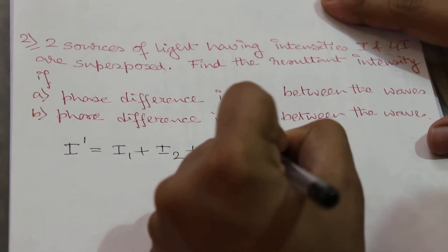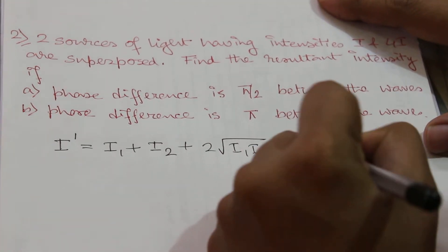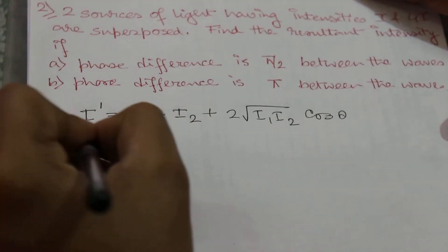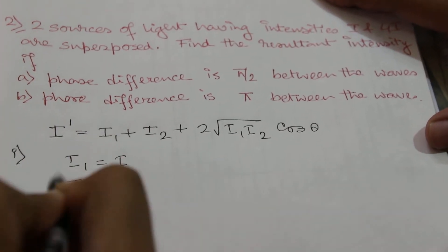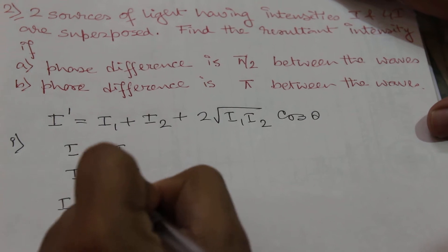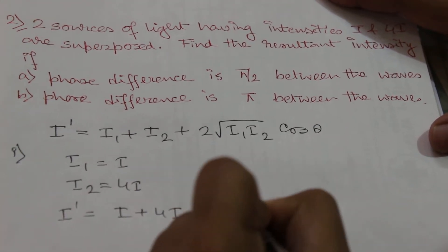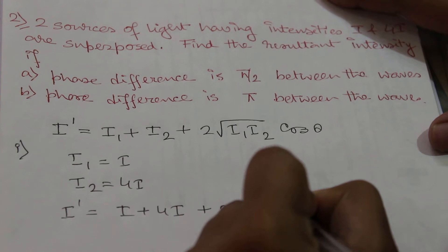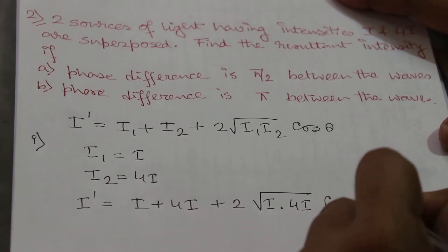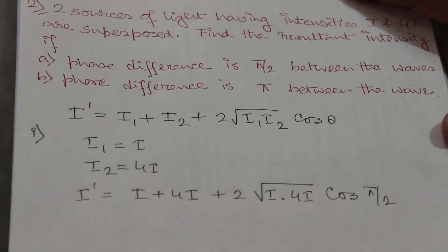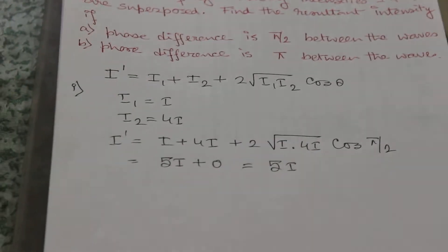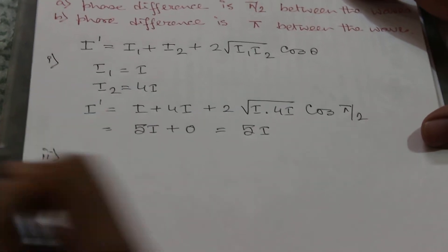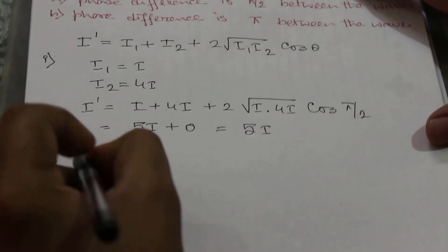In the first case, i1 = i and i2 = 4i. So I' = i + 4i + 2·√(i × 4i)·cos(90°). Since cos(90°) = 0, the last term equals zero. The final answer for case one is I' = 5i.